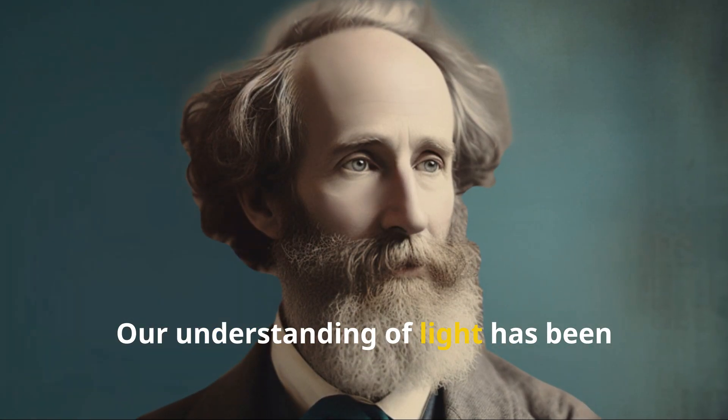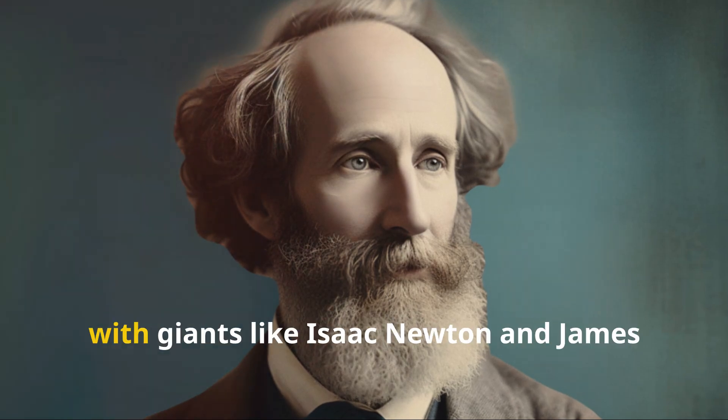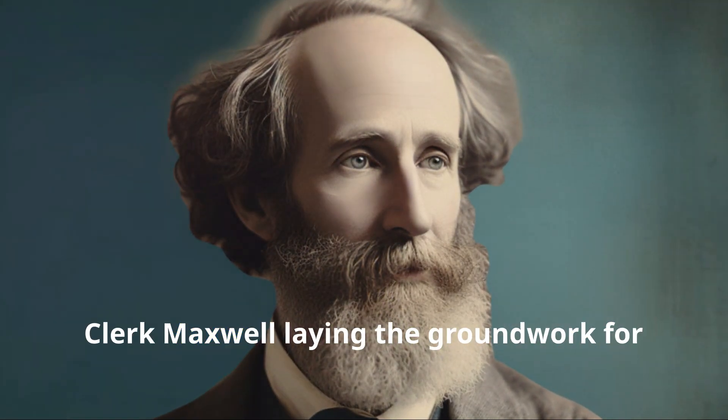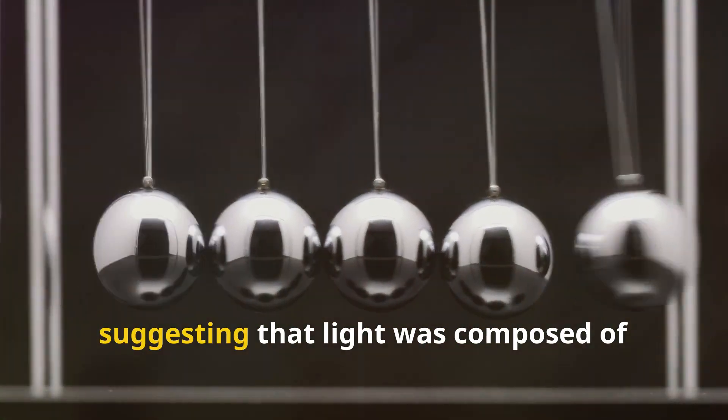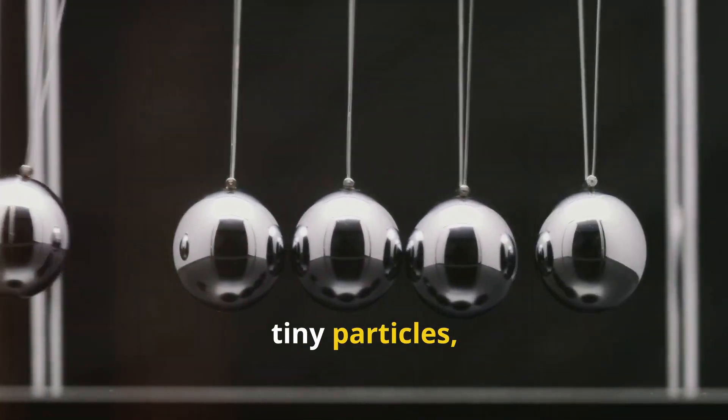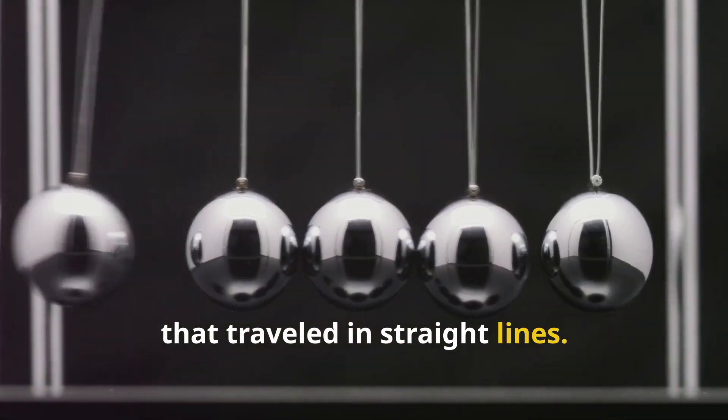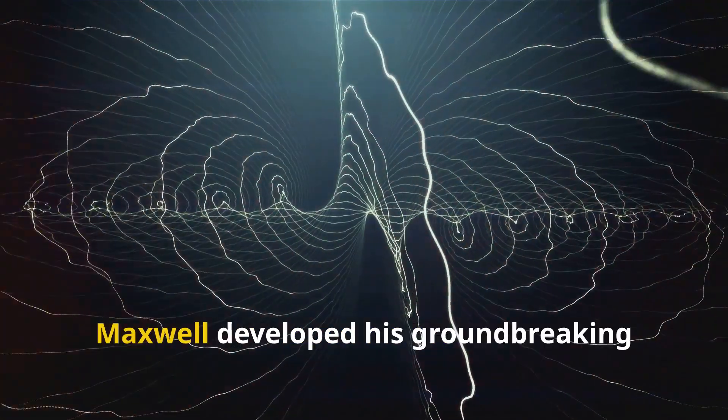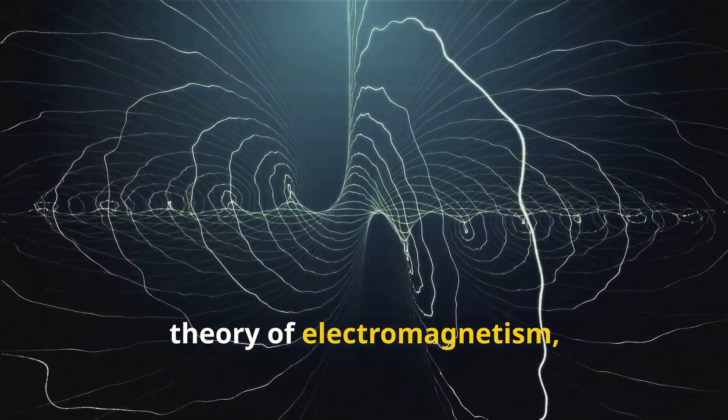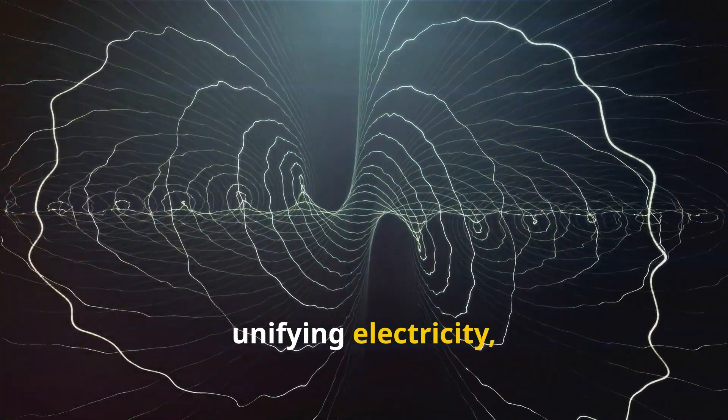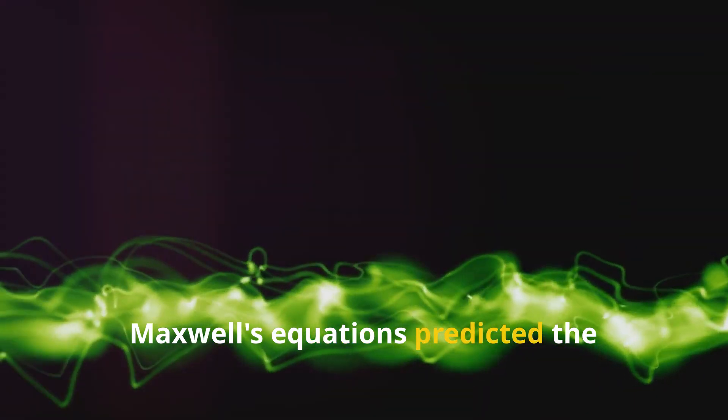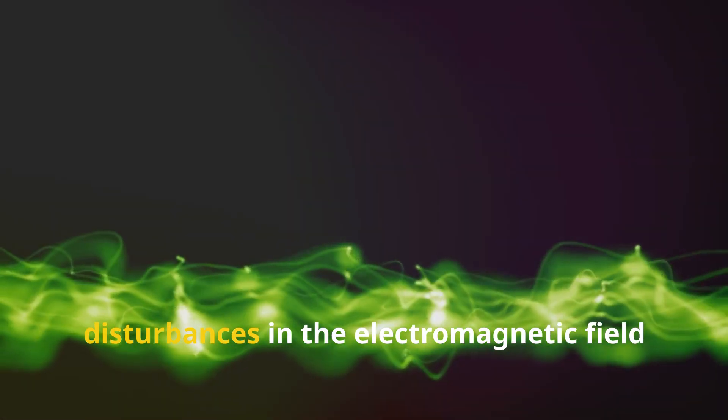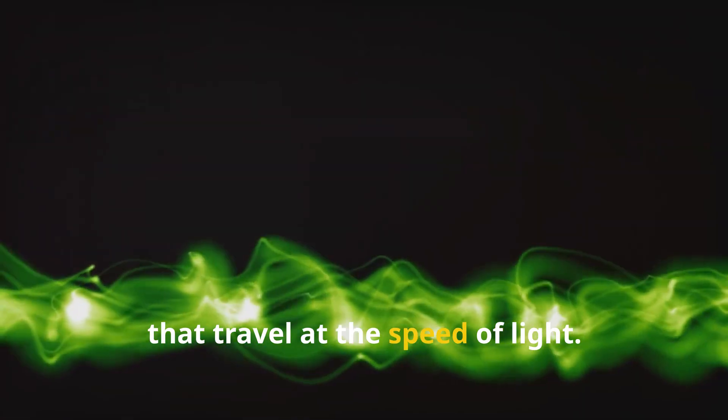Our understanding of light has been shaped by centuries of scientific inquiry, with giants like Isaac Newton and James Clerk Maxwell laying the groundwork for the quantum revolution. In the 17th century, Newton proposed the corpuscular theory of light, suggesting that light was composed of tiny particles, or corpuscles, that traveled in straight lines. In the 19th century, Maxwell developed his groundbreaking theory of electromagnetism, unifying electricity, magnetism, and light into a single force. Maxwell's equations predicted the existence of electromagnetic waves, disturbances in the electromagnetic field that travel at the speed of light.